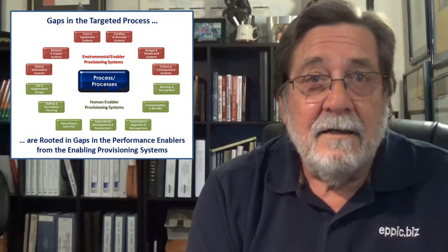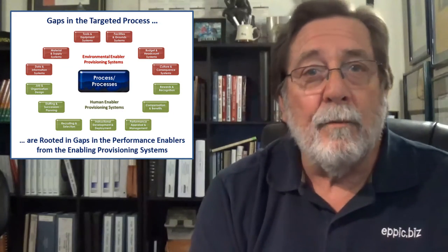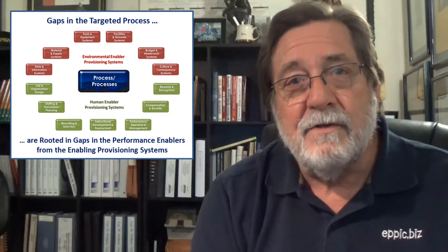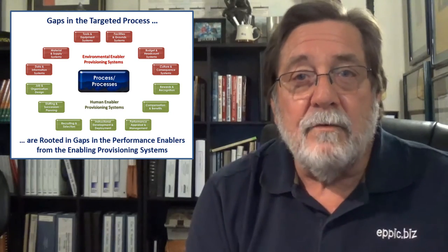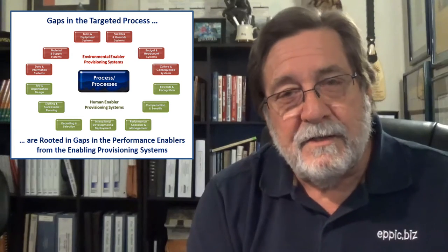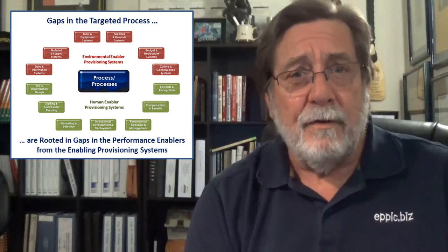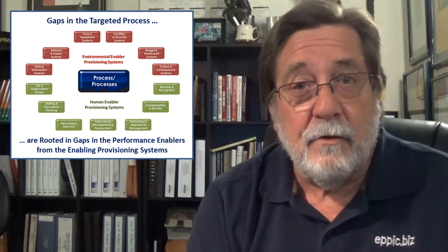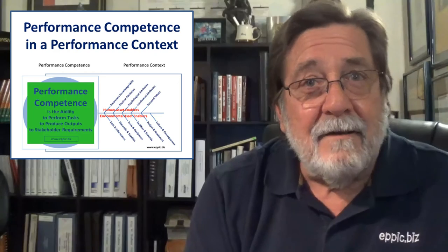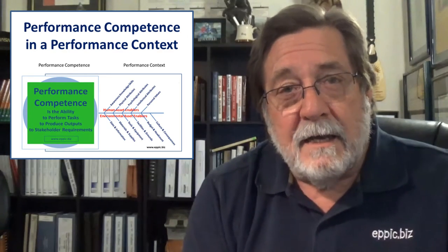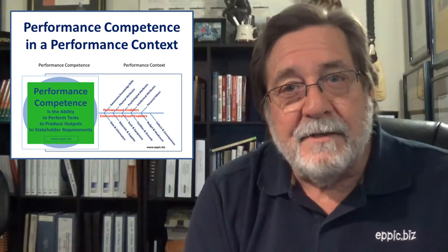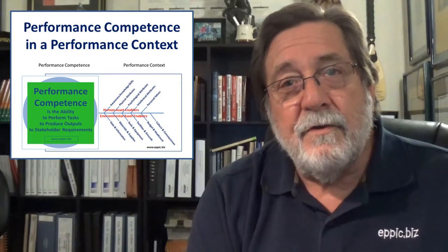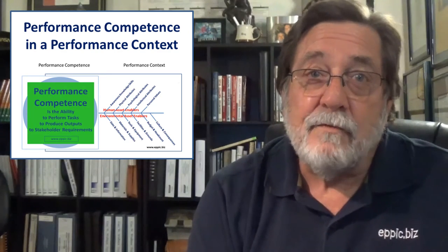This is just another view of that. There's a blue box in the middle — that's the process we're focusing on. Then there are green boxes: these are enabling asset management systems that are human in nature. In red, they're environmental asset enabling management systems. So there are systems in the organization that provide data to the process, and people that are trained to the process, as but two examples. Performance competence is in a performance context, and that context makes available certain assets — people and things, humans and environmental assets — that either are conducive to the needs of the process or are deficient. That's what we've got to look for.